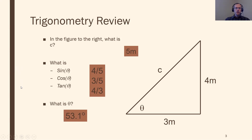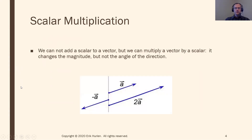That's a little trigonometry review. Because vectors have directions, angles are generally always involved, so there are lots of sines and cosines that show up with them, as we'll see throughout the course.